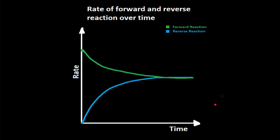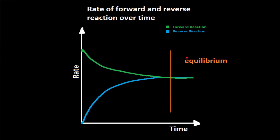Looking at the rate of forward and reverse reaction over time: dynamic equilibrium means the rate of the forward reaction is equal to the rate of the reverse reaction. This means equilibrium is reached when they are both equal to each other — basically when the lines turn straight.